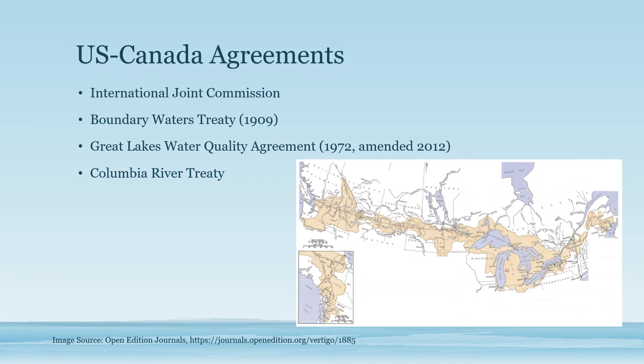Finally, the Columbia River Treaty, signed in 1961, established the development and operation of dams on the Columbia River Basin in the northwest United States. It's concerned with energy and flood control, has cost-sharing and energy provisions, and was organized by both countries. Four dams were constructed as a result — three in British Columbia and one in Montana. There's no specific end date for this treaty, but either country can terminate most provisions with 10 years advance notice after September 2024, or 60 years after the signing of the treaty.